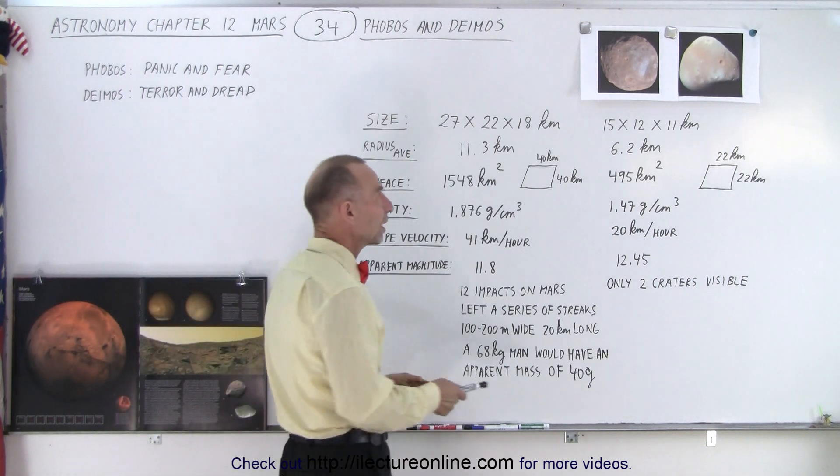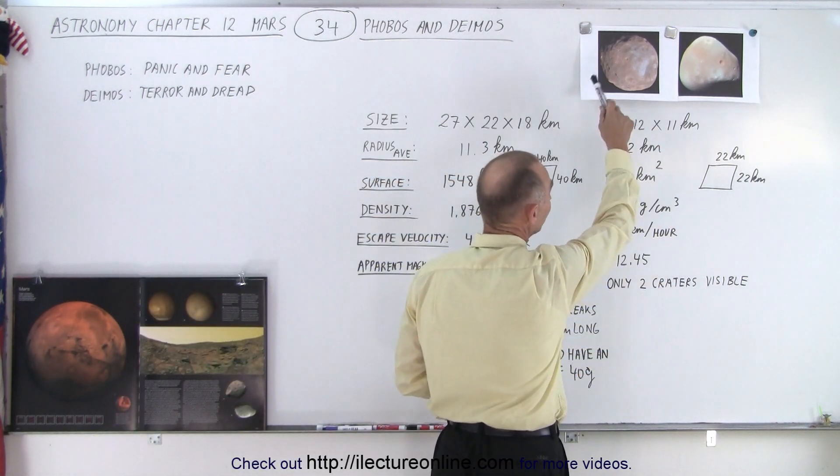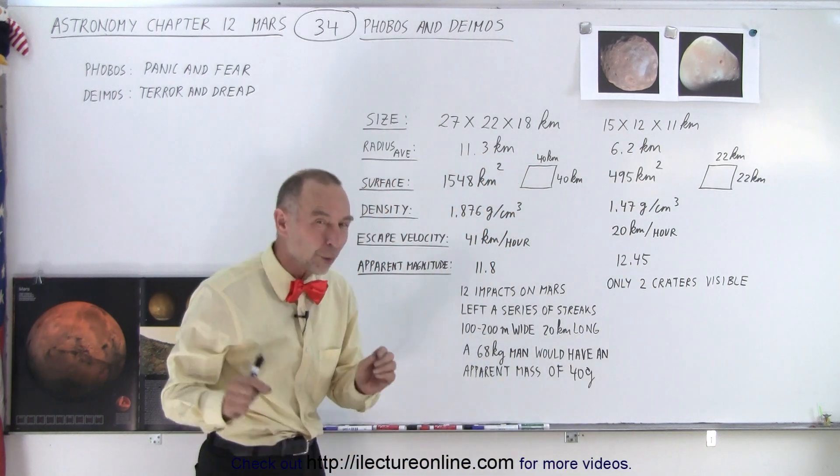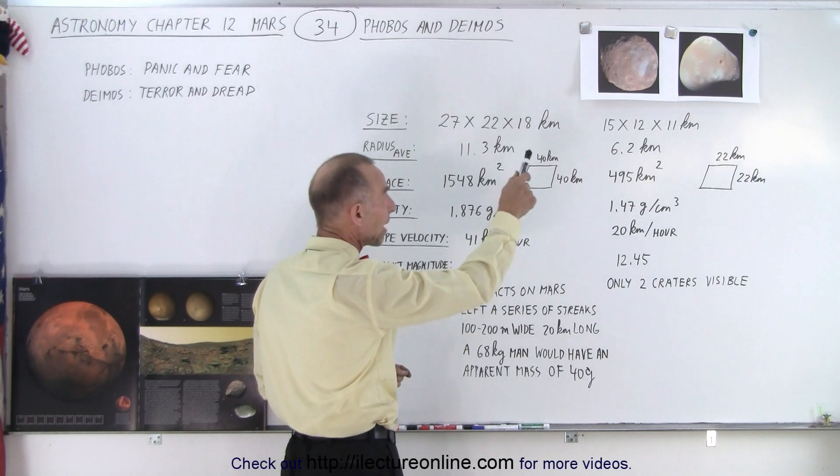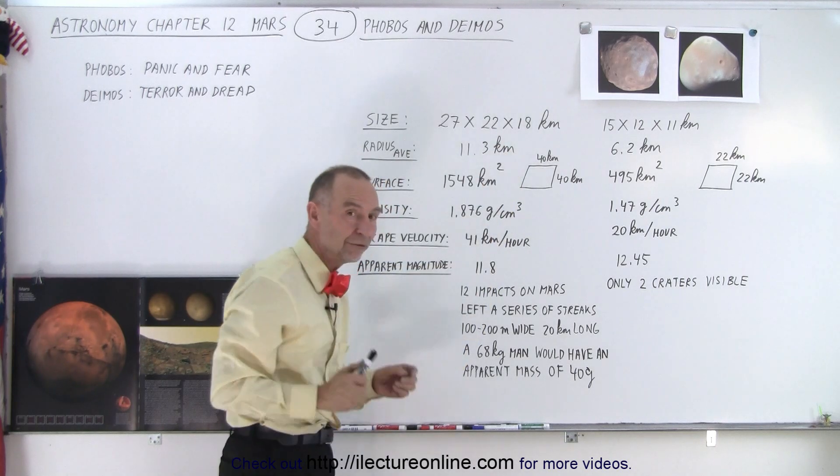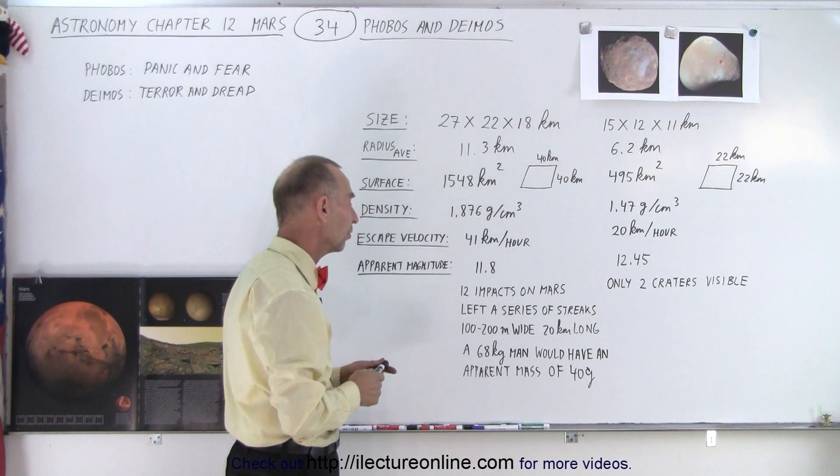You can only see two craters visible on Deimos. You can see lots and lots of craters on Phobos, but what's also really interesting is that we've been able to trace back some of the marks on Phobos back to impacts on Mars.